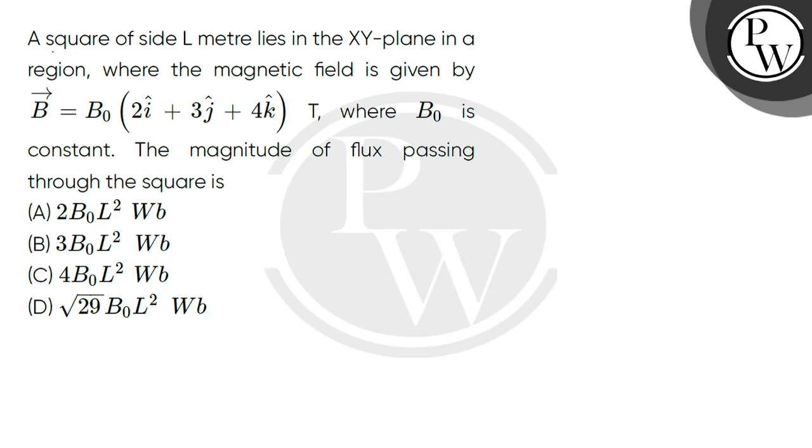Let's read the question. A square of side L meter lies in the xy plane in a region where the magnetic field is given by B vector equals B₀(2î + 3ĵ + 4k̂) tesla, where B₀ is constant.